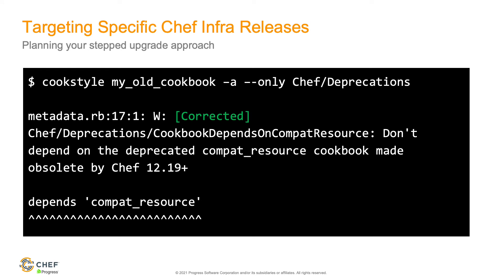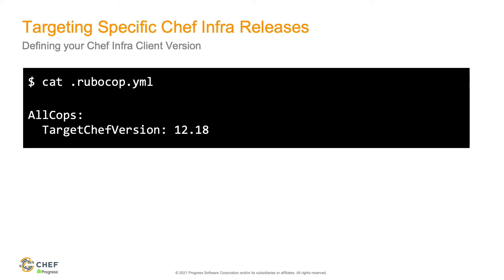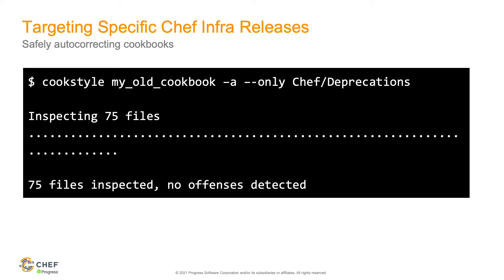The key thing in our upgrade is making sure we don't break code in our environment. Removing the Compat Resource Cookbook is safe if you're on Chef 12.19 or later — but if our environment has 12.18, that cookbook would break. We can handle this by editing our .rubocop.yaml config. We specify 'AllCops: TargetChefVersion: 12.18' and Cookstyle will ensure the cops that run are safe against an environment running 12.18. When we scan that same cookbook now it inspects 75 files and finds no offenses — meaning we're ready to upgrade this cookbook to Chef 13.